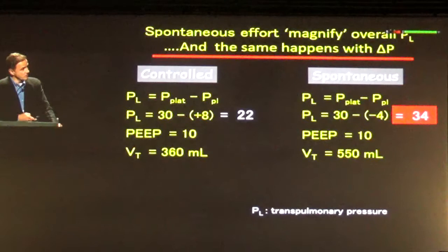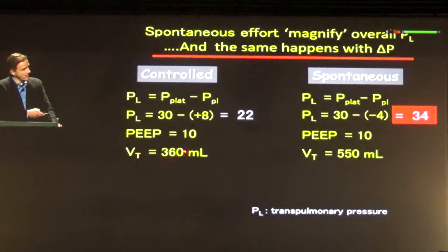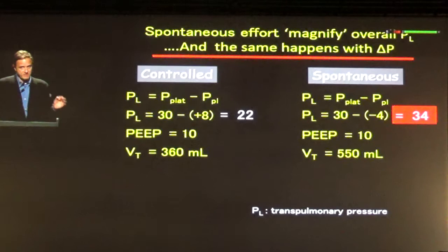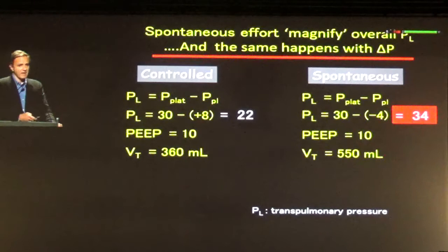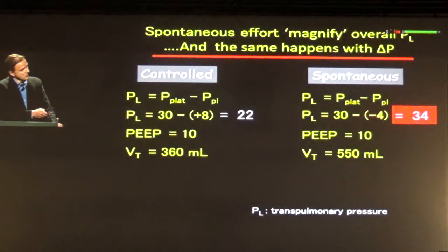This is a very common situation at the bedside. We have a patient under pressure control ventilation. You set a delta pressure of 20, PEEP of 10, and you have a kind of protective tidal volume. A few minutes later, the patient is awake and now I have assisted pressure control ventilation. The patient is triggering every breath and you typically see a slight increase in tidal volume. If I had an esophageal balloon, I could track that here the transpulmonary pressure at any inspiration is 22, but the swings in pleural pressure are negative and my transpulmonary pressure may reach 34 — an alarming signal.